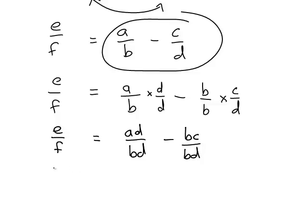So that then gives us e divided by f equals ad divided by bd minus bc divided by bd. And from there, because we now have the same denominator, we can simply combine the numerator. So ad minus bc, and that's all divided by the common denominator of bd.